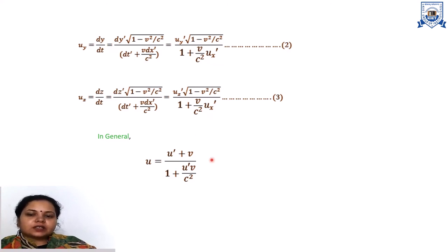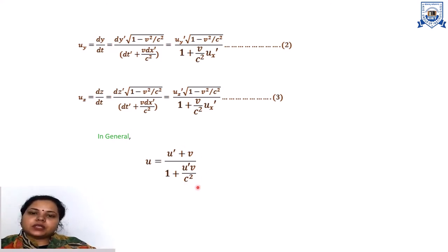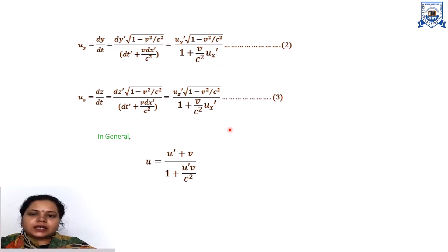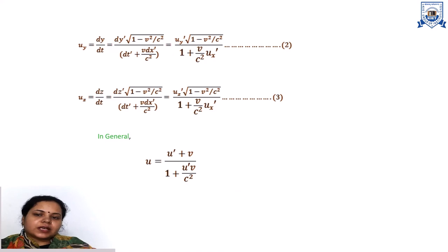In general, taking only the x-component of velocity: u = (u-dash + v) / (1 + u-dash·v/c²). You can see that this velocity transformation equation in relativistic mechanics is completely different from classical mechanics. In classical mechanics, Galileo derived Ux = Ux-dash + v, or Ux-dash = Ux − v. So these relativistic equations are known as the velocity transformation equations, or the addition of velocity theorem.